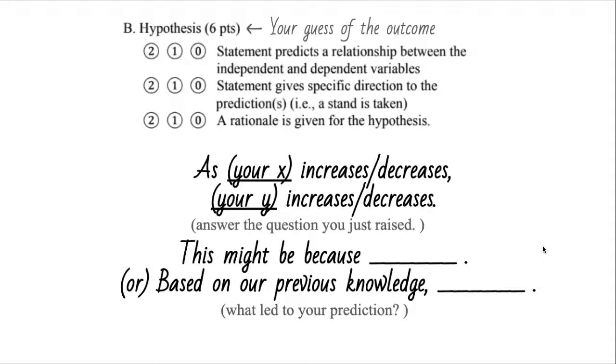And then second of all is your hypothesis. This is basically kind of your guess of the outcome. If you've written chemistry reports before, you know what a hypothesis is. Here's another template for you to follow, just to make sure that things are very organized. As your x increases or decreases, your y increases or decreases. It doesn't have to be accurate, I don't think, but you need to show your reasoning behind your guess and your trend. This might be because, or based on our previous knowledge, this thing happens, so that thing happens.